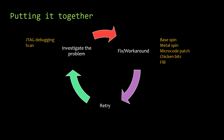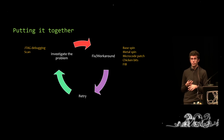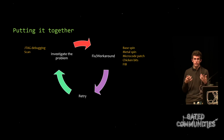Putting this all together, when dealing with hardware we've talked about JTAG debugging and scan as two ways to help identify the problem. When it comes to fixing things — I use workaround in there as well because sometimes you've got to get stuff out the door and the line between fix and workaround becomes very blurred — you have silicon spins, you have microcode patch, you have chicken bits, and if you need a quick fix, you can always go and get a FIB done.